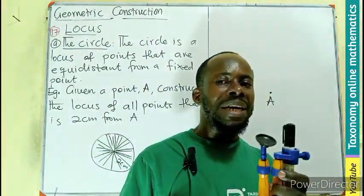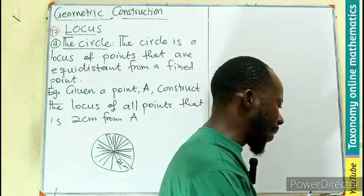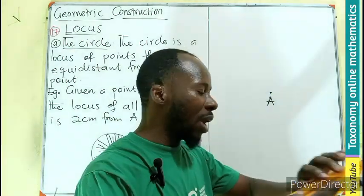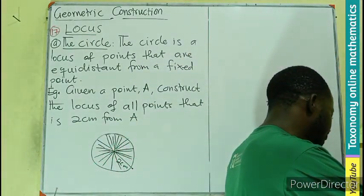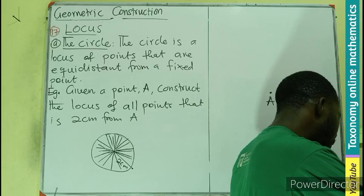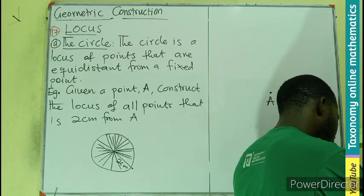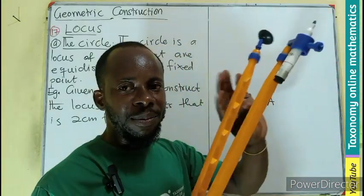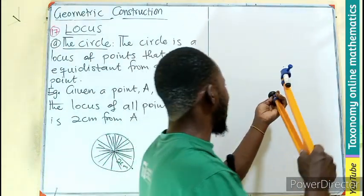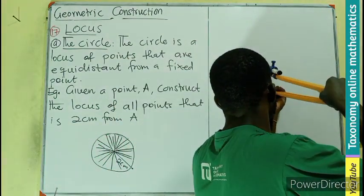The next thing is to measure two centimeters using our compass on the ruler. So I will be measuring two centimeters. So I have two centimeters. Putting the compass pin at A.